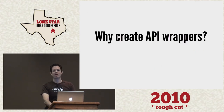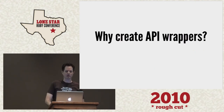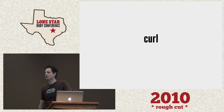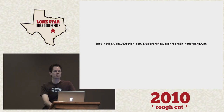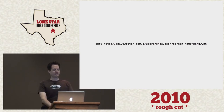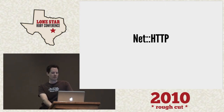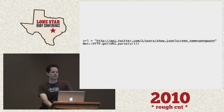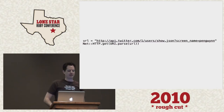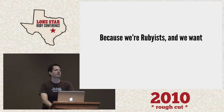So why create API wrappers in the first place? I mean, we've got curl. Curl's a great way of interacting with an API — just pass the URL, you get some JSON back or XML, God forbid. There's also Net::HTTP, so you can do the same thing in Ruby without having to drop out to the system. But we're Rubyists — we don't want to deal with those low-level libraries. We want more Ruby in our API.